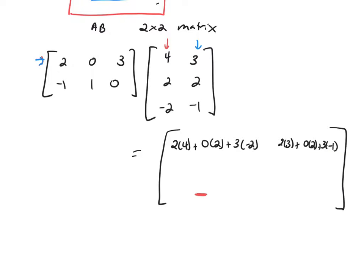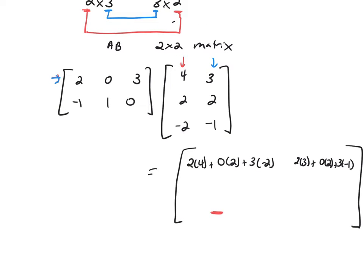You're going to multiply. That's in the second row and the first column. So you multiply the corresponding entries together and add them. So it would be negative 1 times 4, 1 times 2, 0 times negative 2.